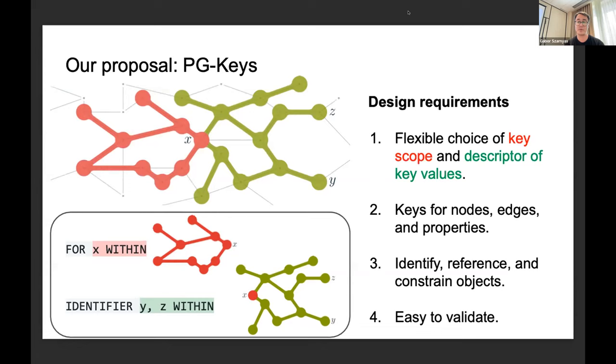The second design requirement was to go beyond just being able to specify keys for nodes, also at the very least be able to specify keys for edges and properties. We'd also like our formalism and our solution to be able to support identifying, referencing, and constraining objects. And finally, it should be practical to validate these constraints.